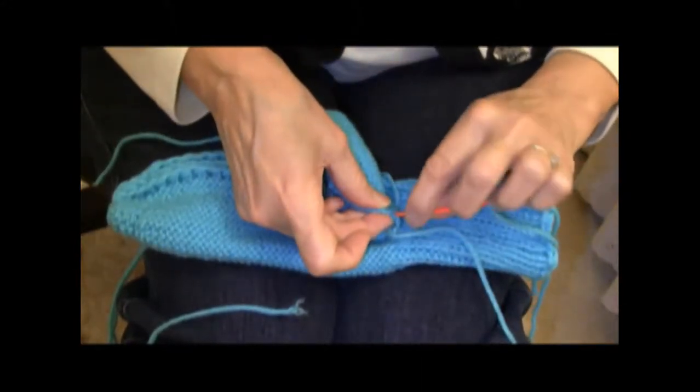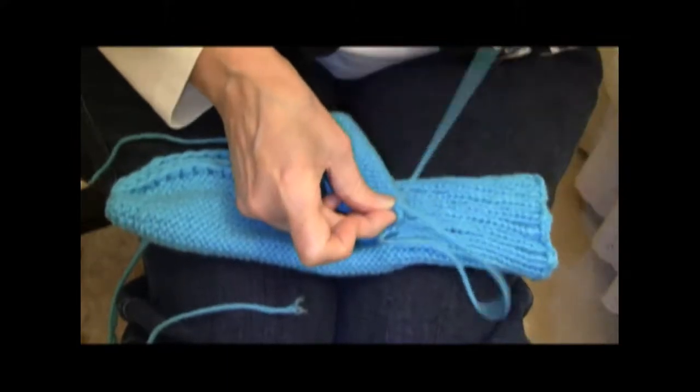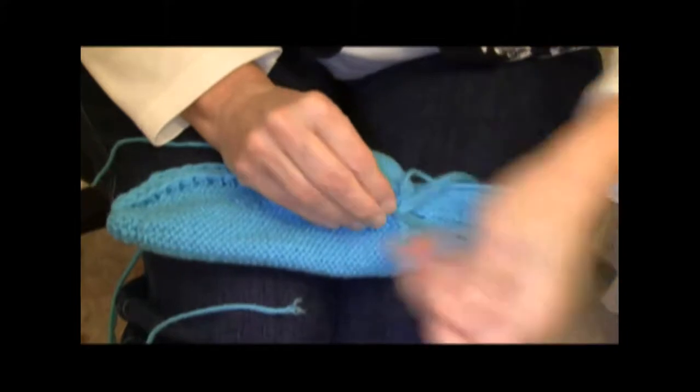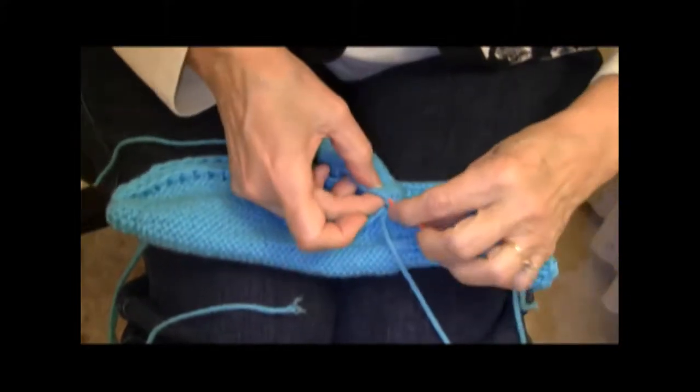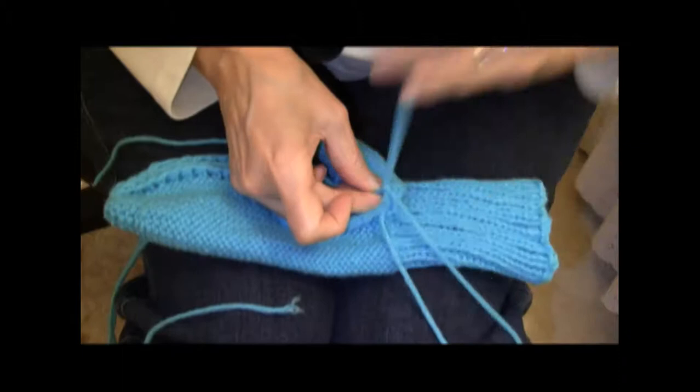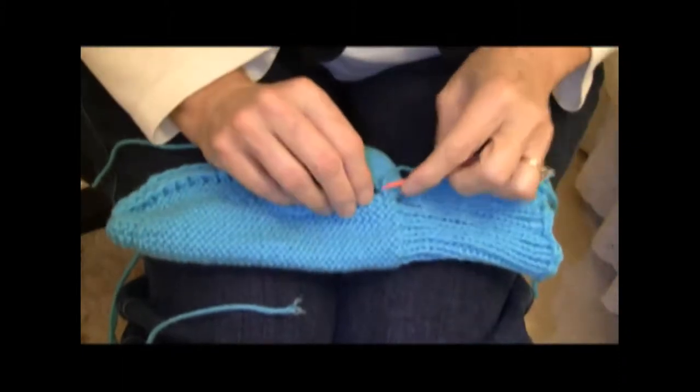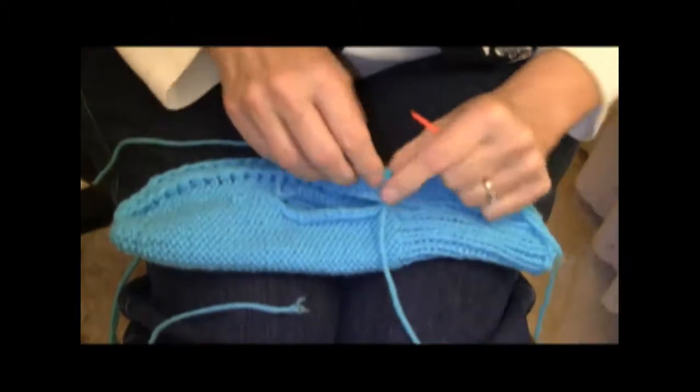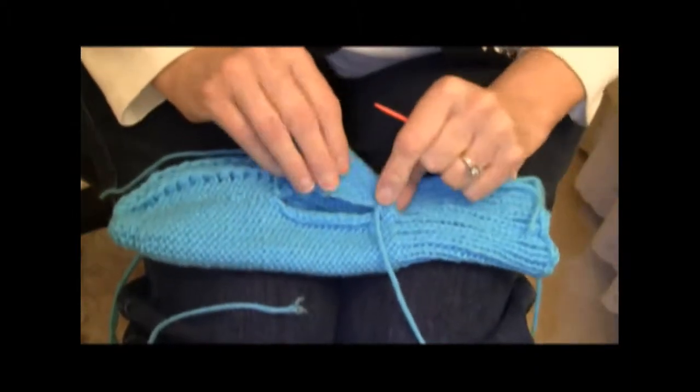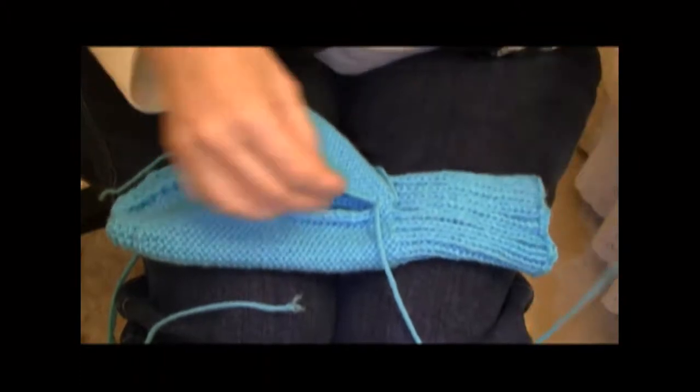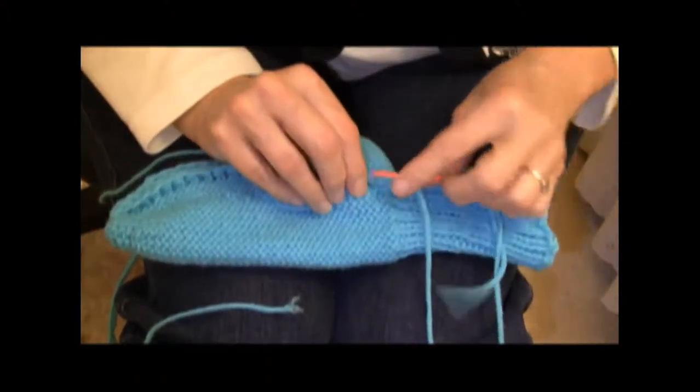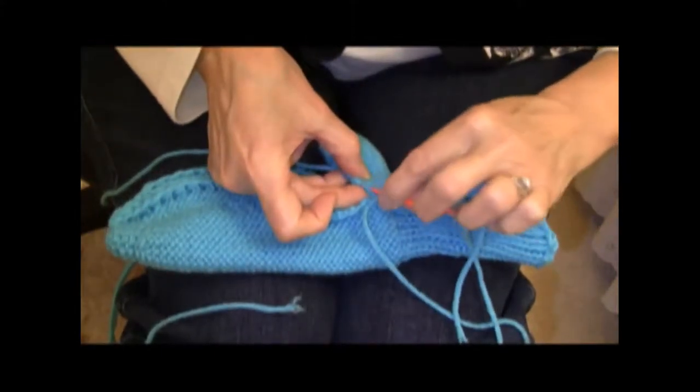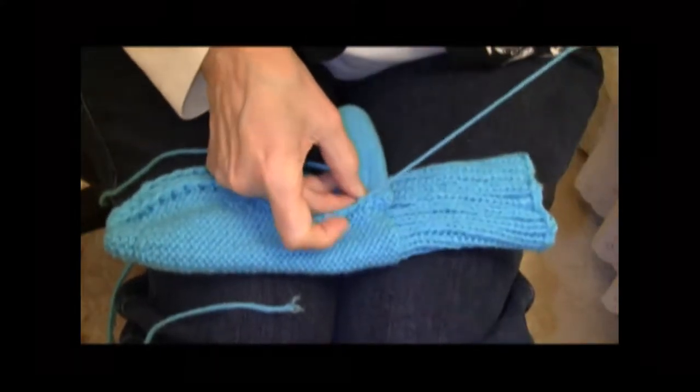I take a bite from the mitten, and then with my needle, I take a bite from the thumb, mitten, thumb. I want to keep my seam pretty narrow, and as a matter of fact, with this reverse stockinette, I can work along the slant and get a nice seam. So I will keep putting that mattress stitch in and working my way up the edge of this thumb.